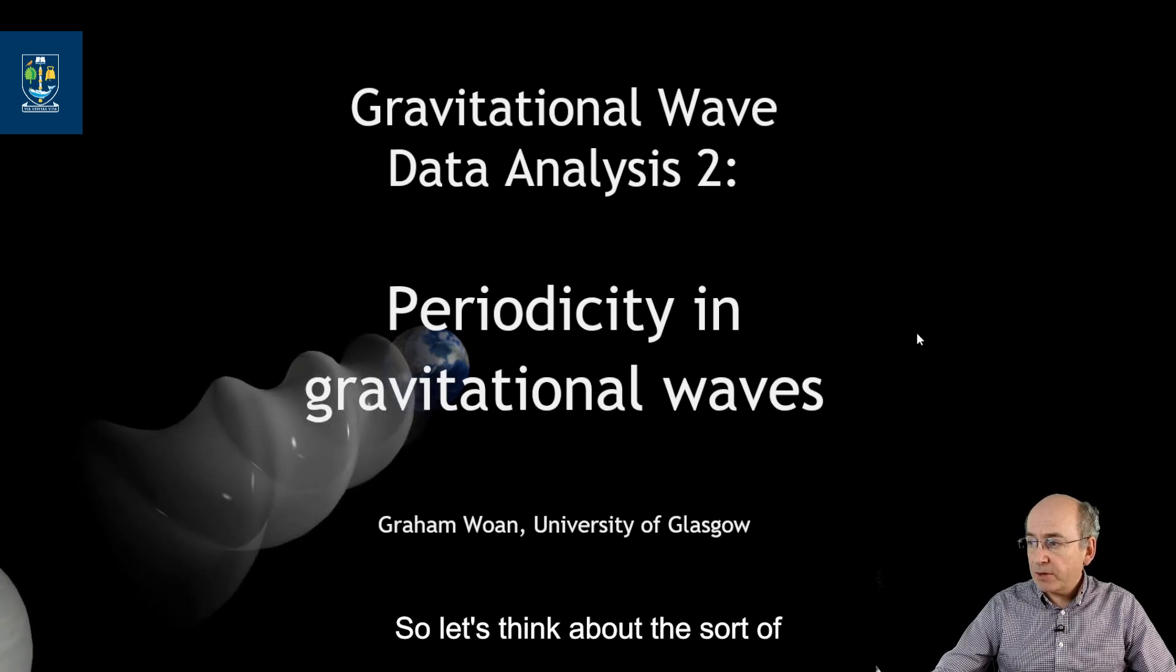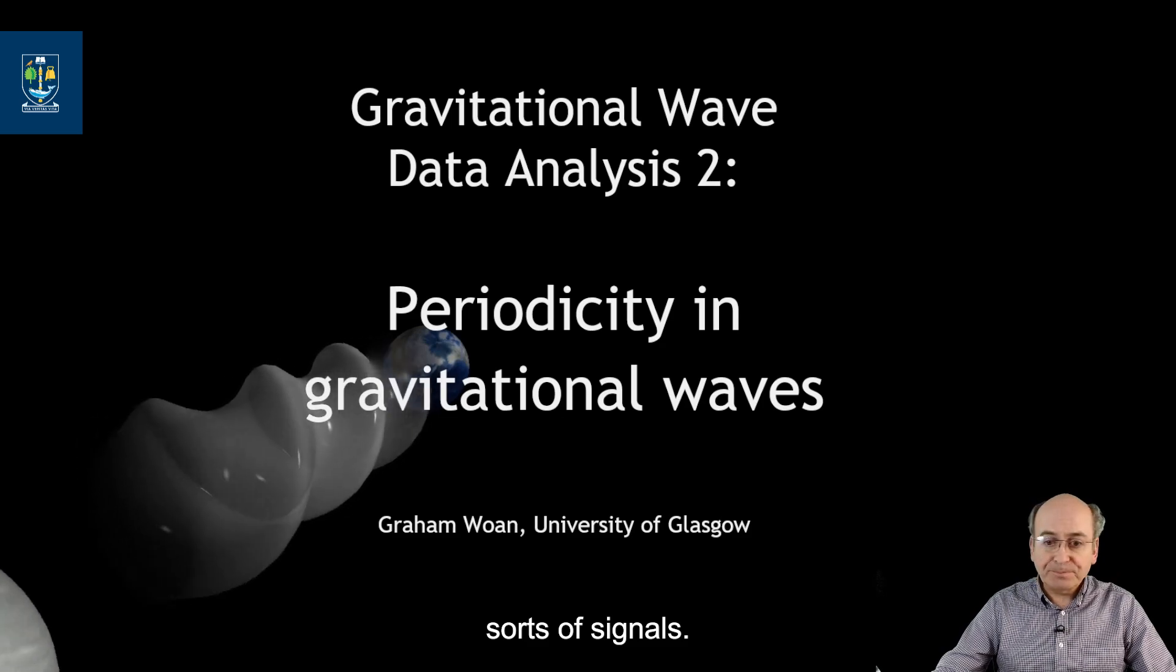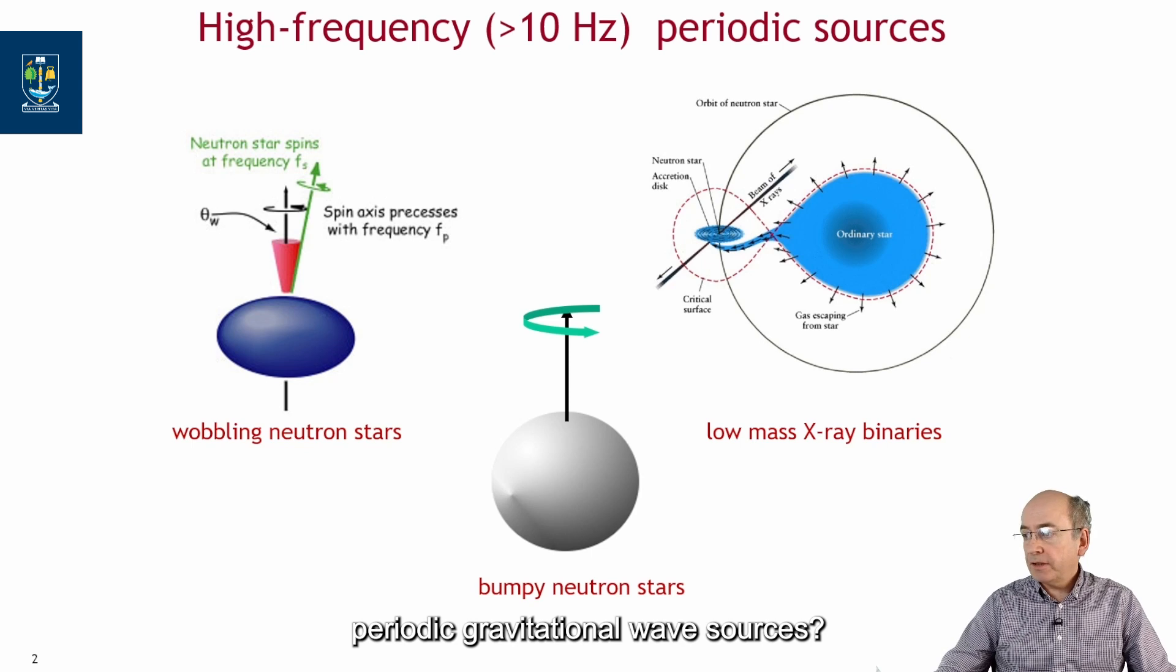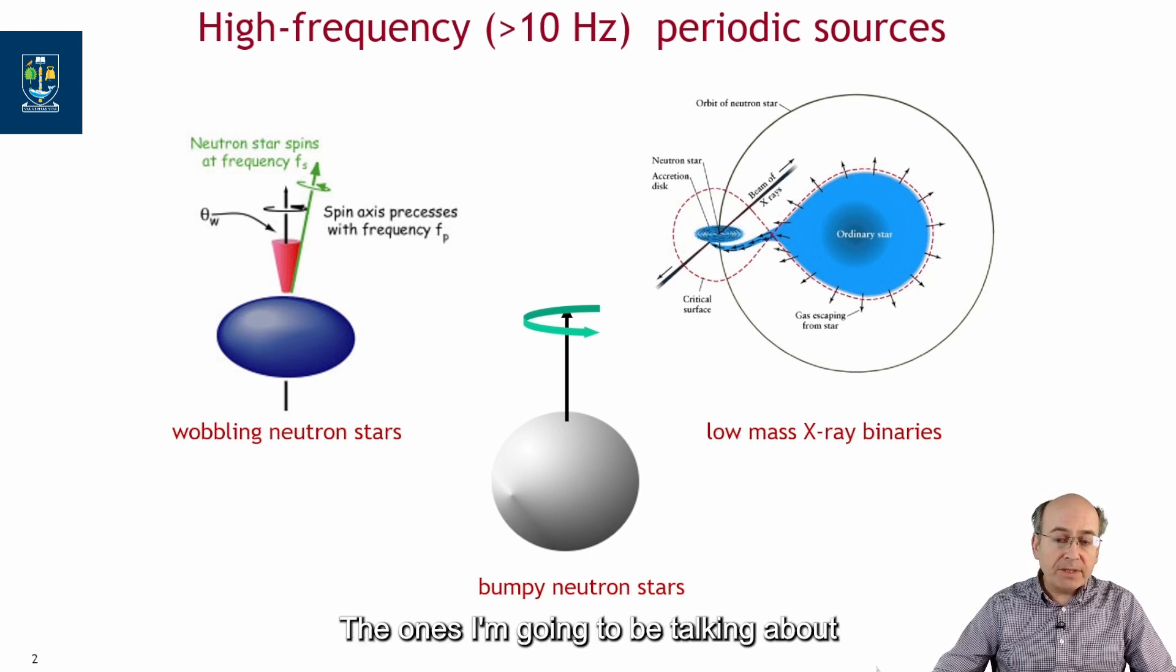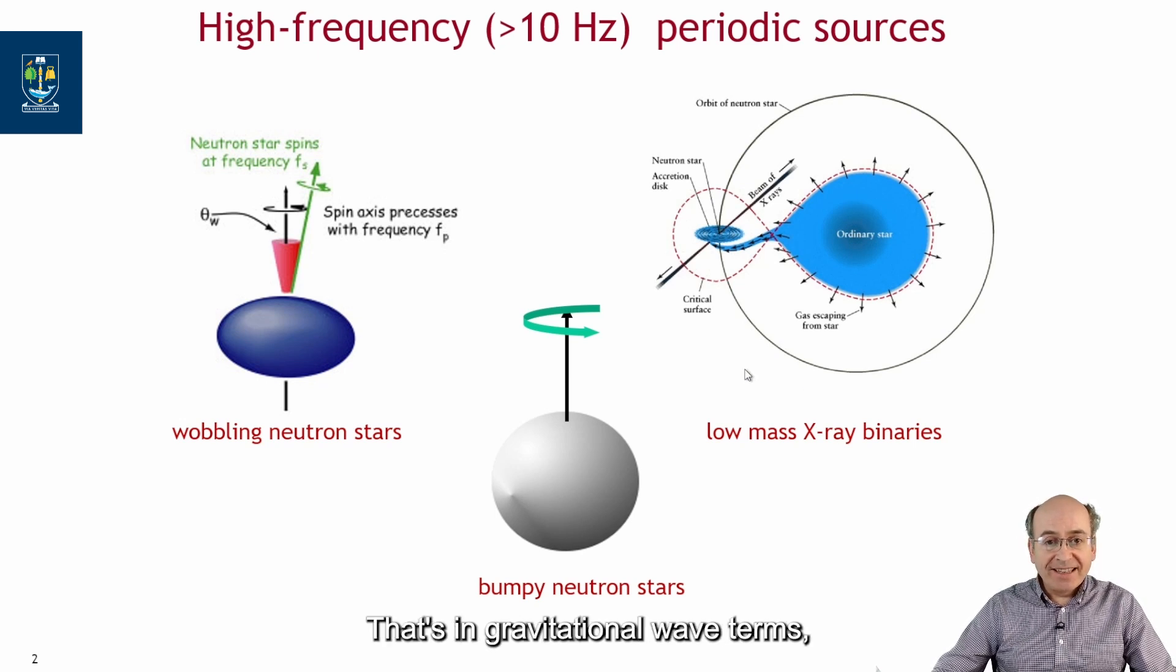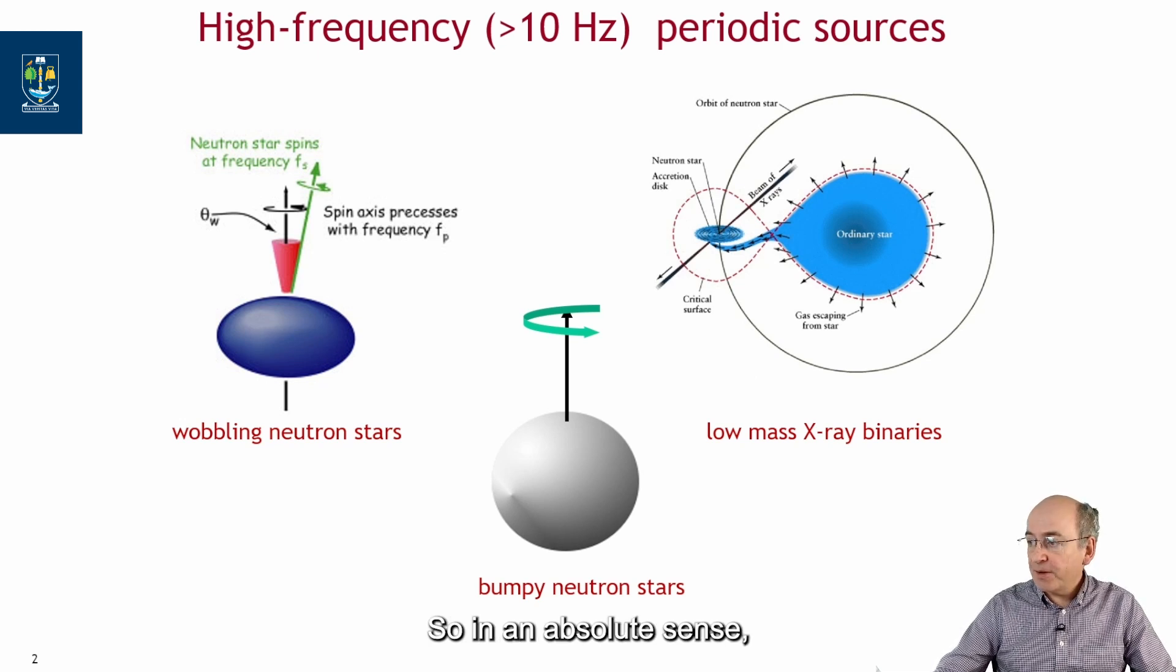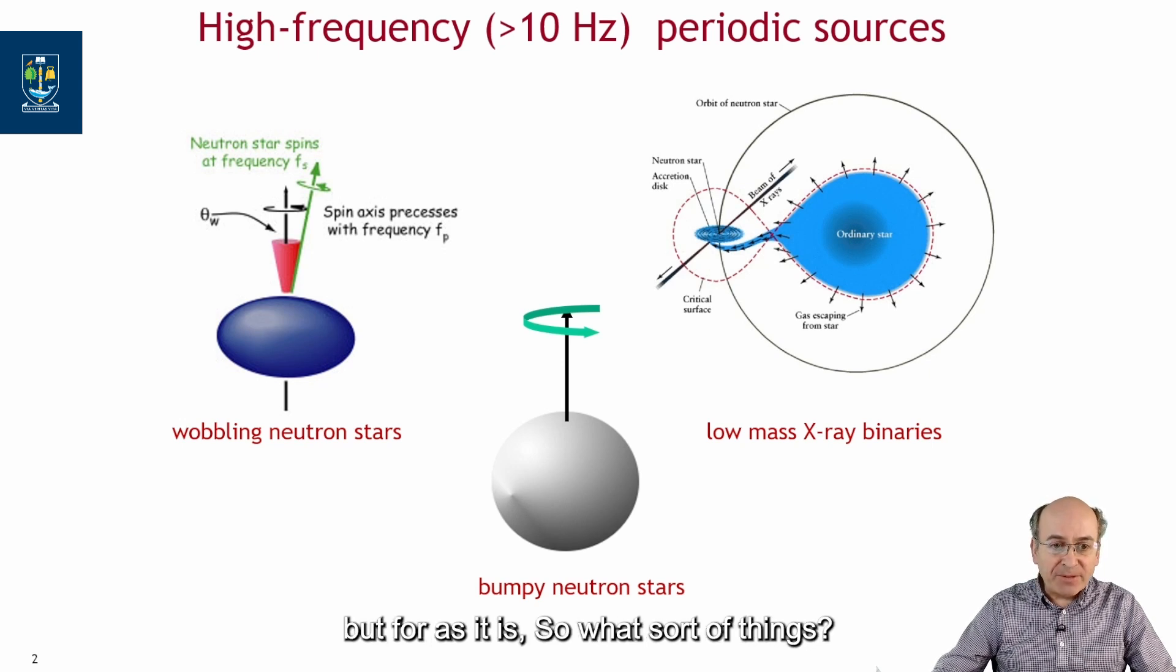So let's think about the sorts of sources which can create those sorts of signals. What do we mean when we talk about periodic gravitational wave sources? The ones I'm going to be talking about are what we would describe as high frequency gravitational wave sources. That's in gravitational wave terms, frequencies over about 10 Hz. So in an absolute sense it's not a particularly high frequency, but for us it is.